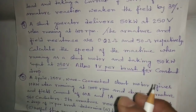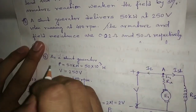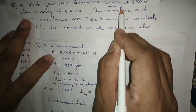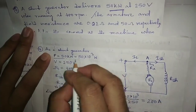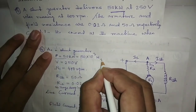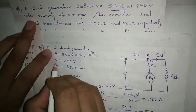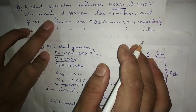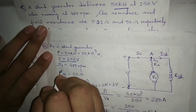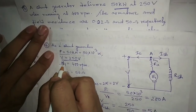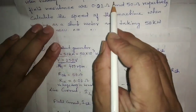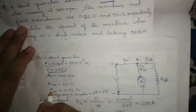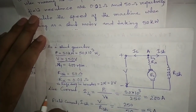Given: this is a shunt generator case. The delivered power is 50 kilowatt, that is 50 into 10 to the power 3 watt, at 250 volt — so the generated terminal voltage is 250 volt. The generator speed is 400 rpm, called N1. The field resistance Rsh is 50 ohm and armature resistance Ra is 0.02 ohm.